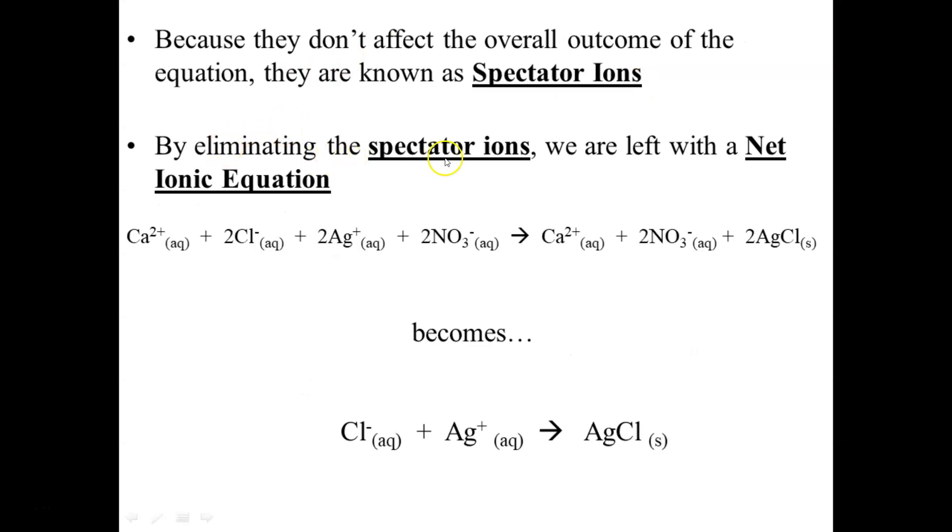Now by eliminating these spectator ions, we are left with the ions that do participate in the chemical equation. This is known now as the net ionic equation. The net ionic equation simplifies the complete ionic equation, getting rid of the unnecessary components and focusing on the ones that do matter. You may also notice that I did not write down the coefficients, the 2's in front. That's because chemical equations must be reduced to the lowest ratios, and 2 to 2 to 2 is not the lowest ratio. It's 1 to 1 to 1.